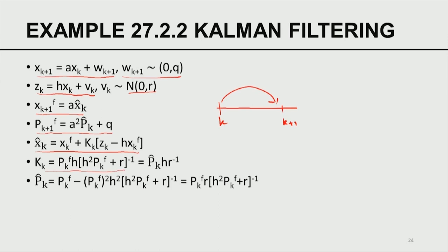The Kalman gain is given by this formula, which can be simplified as P_K_hat times H times r inverse. The analysis covariance is given by this expression: P_K^f minus a positive quantity, therefore the analysis covariance becomes less. So the analysis covariance equals the forecast covariance times r divided by (H² times P_K^f plus r). This is a very simple expression for the analysis covariance as a function of K — all of these arise from the derivation of the Kalman filter.